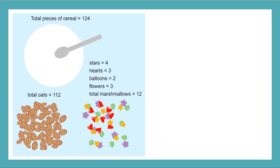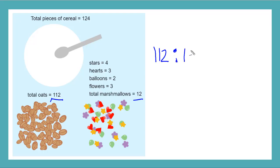Now let's look at the ratio of oats to marshmallows. I have my oats numbers here and my total number of marshmallows here. So oats to marshmallows is 112 to 12.